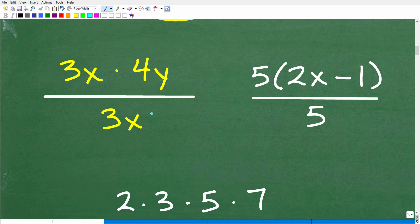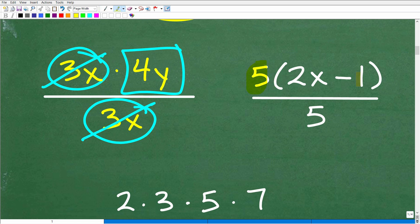This is the major mistake I was talking about - confusing what a factor is. Here we have 3x times 4y over 3x. I have like factors - one factor in the numerator that's the exact same thing as that factor in the denominator. So I can cross cancel and whatever is left over is a simplified version. Let's look at this example: 5 times 2x minus 1 over 5. This is 5 times this factor.